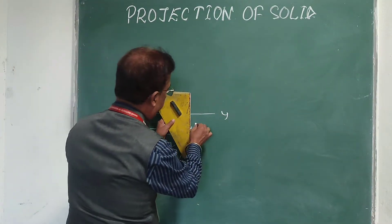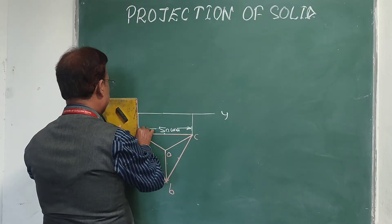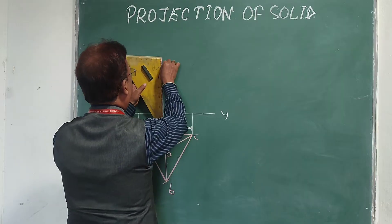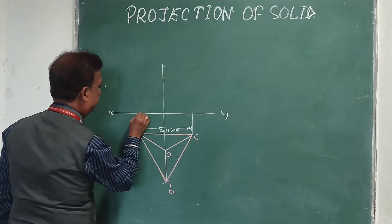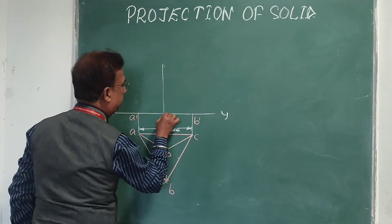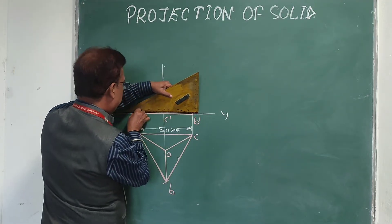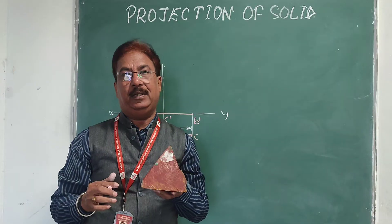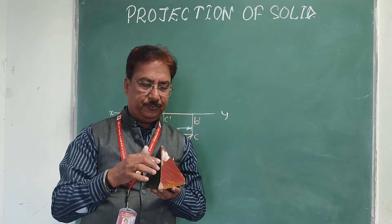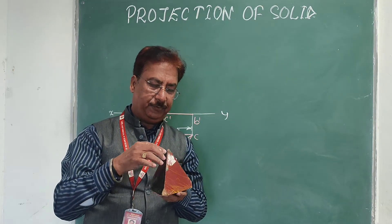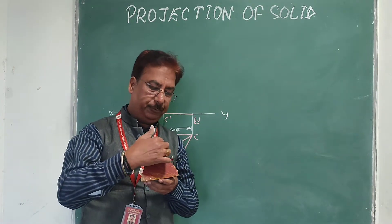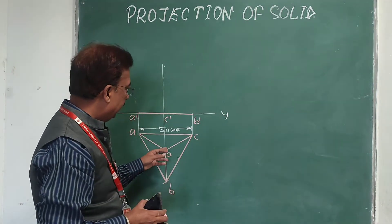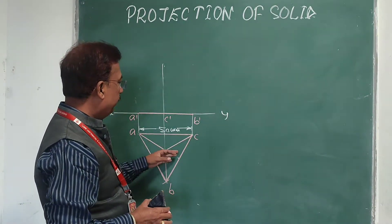Now if I want to go for the front view, the base — or one face — will be on the HP, so we can easily get the base points A dash, B dash, and C dash in the front view. However, the puzzle is finding the apex. In a tetrahedron, the height is not given directly — all sides are equal. All the lines visible in the top view are inclined to both HP and VP, so in the front view we will not get the true length of any of these lines.